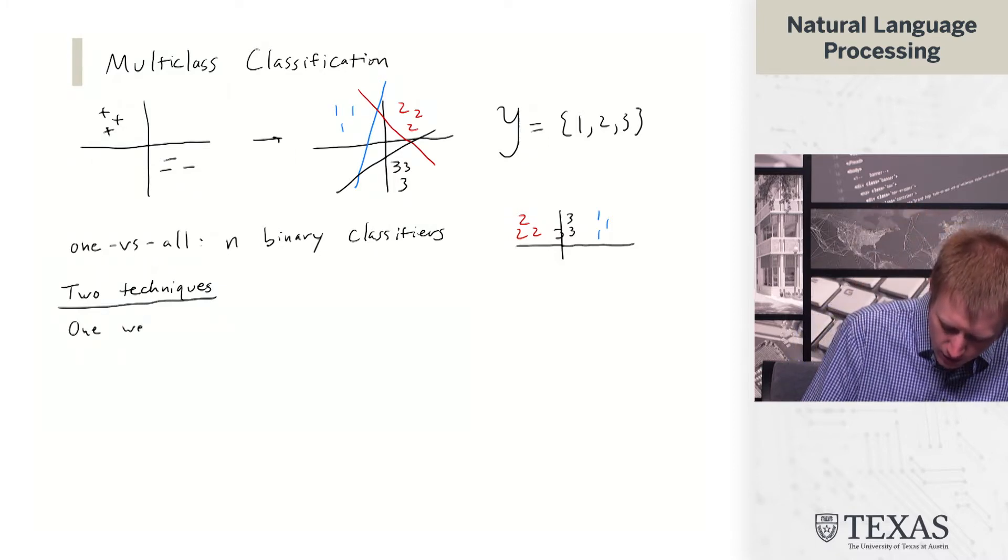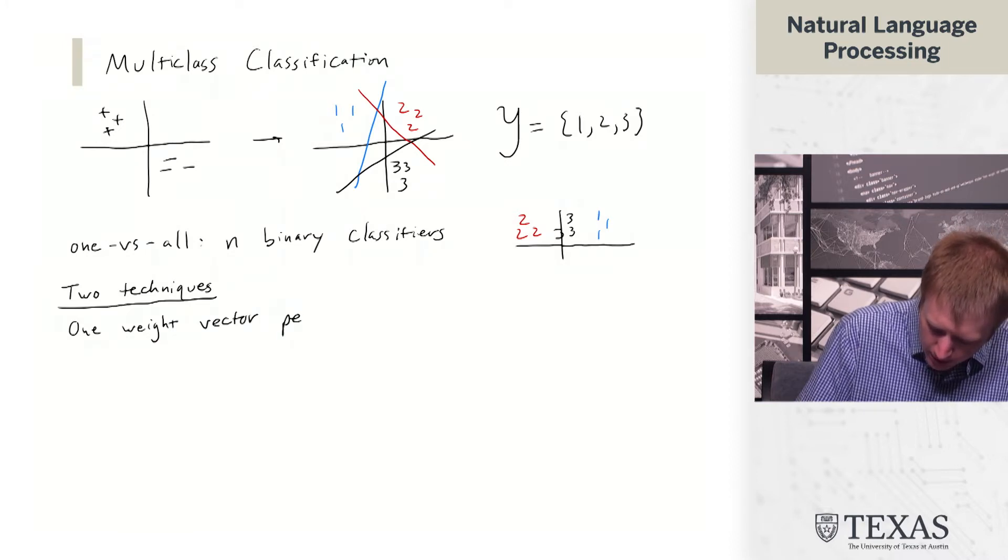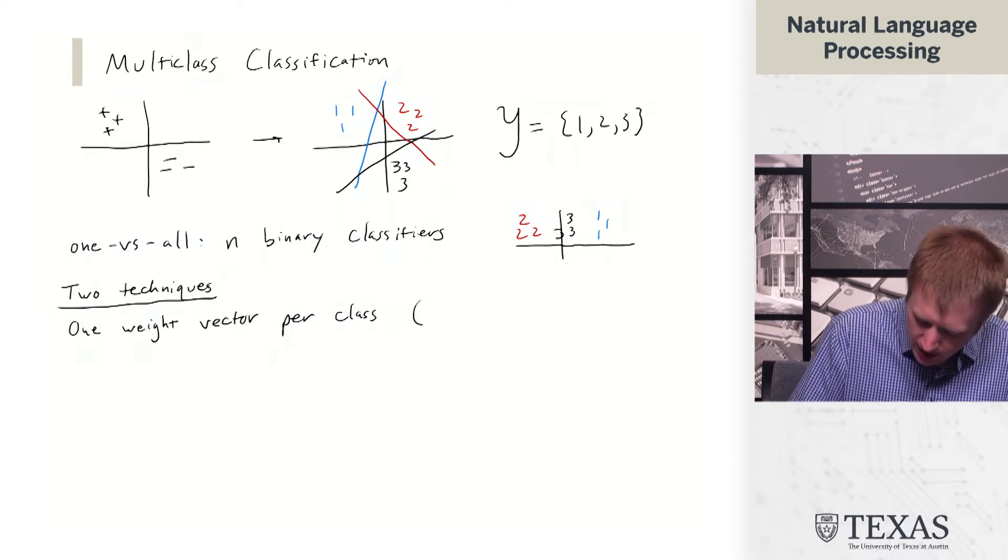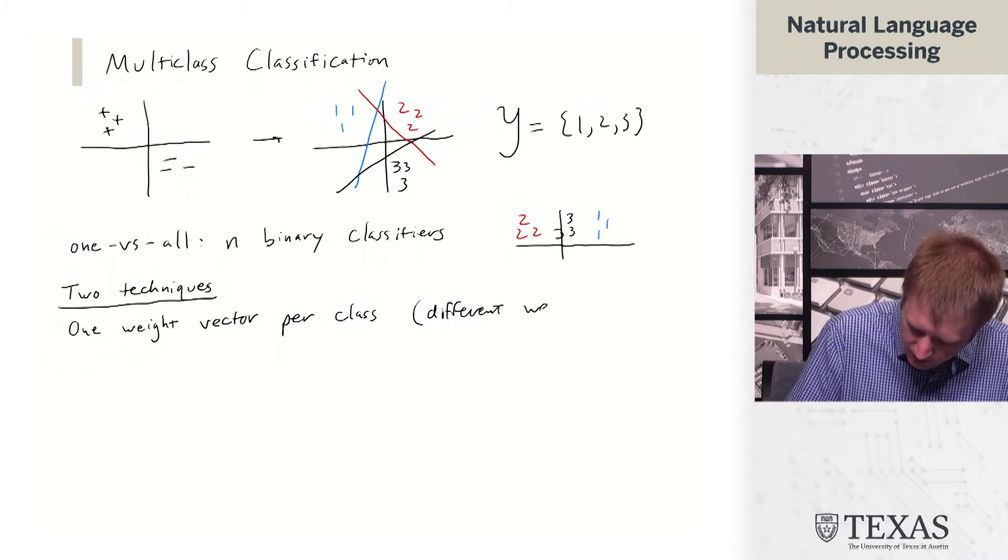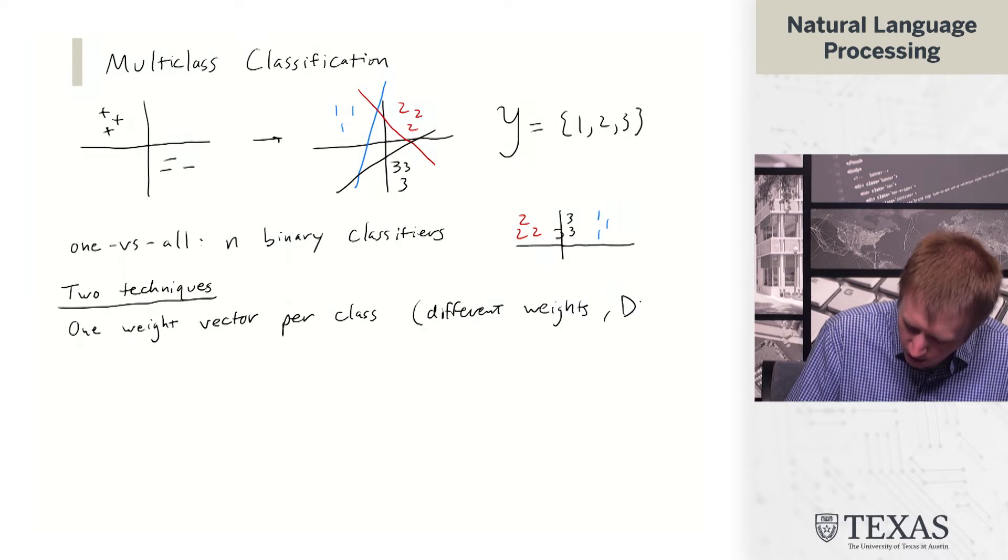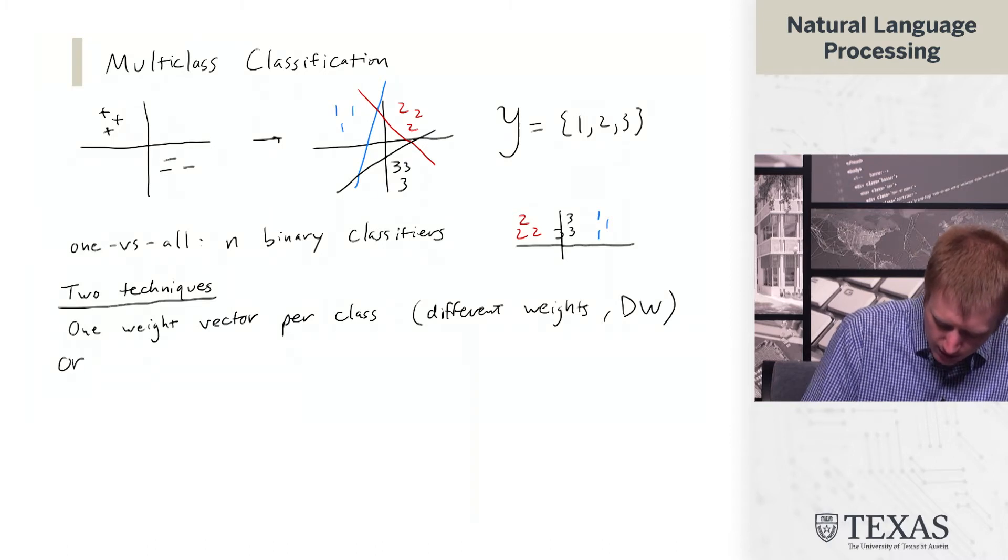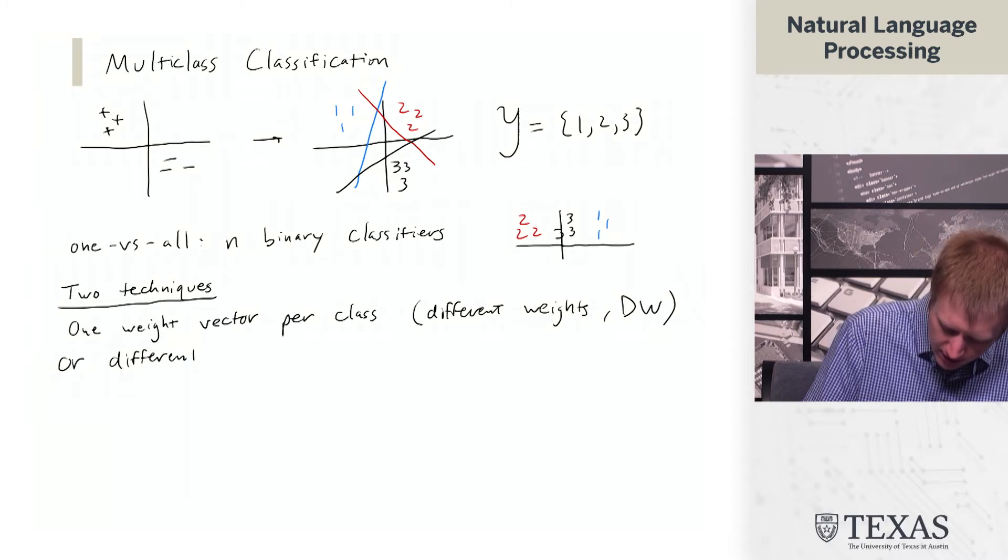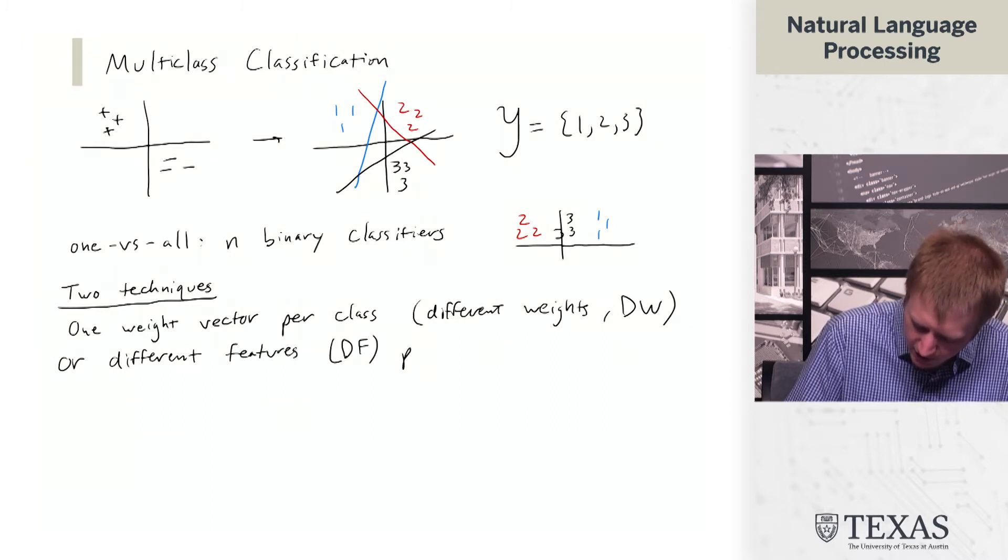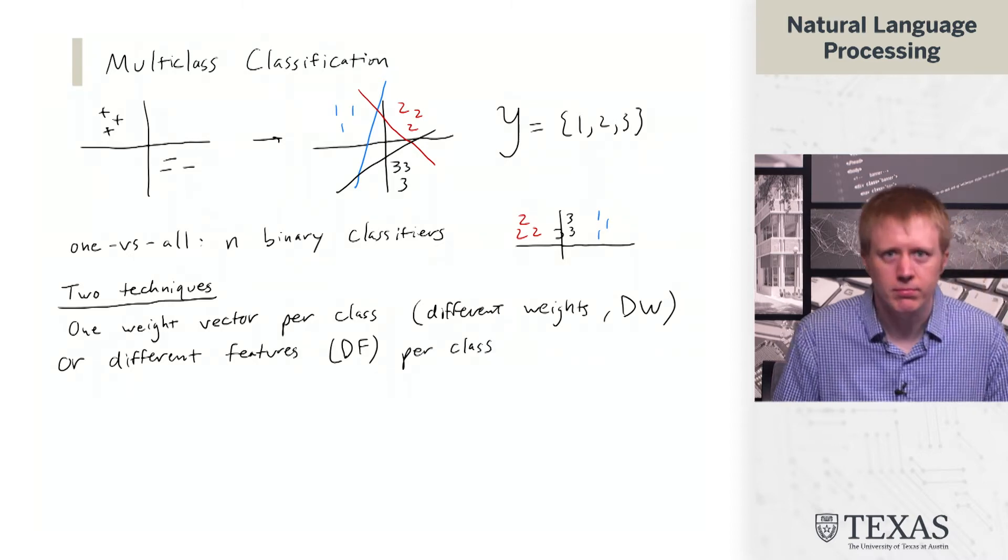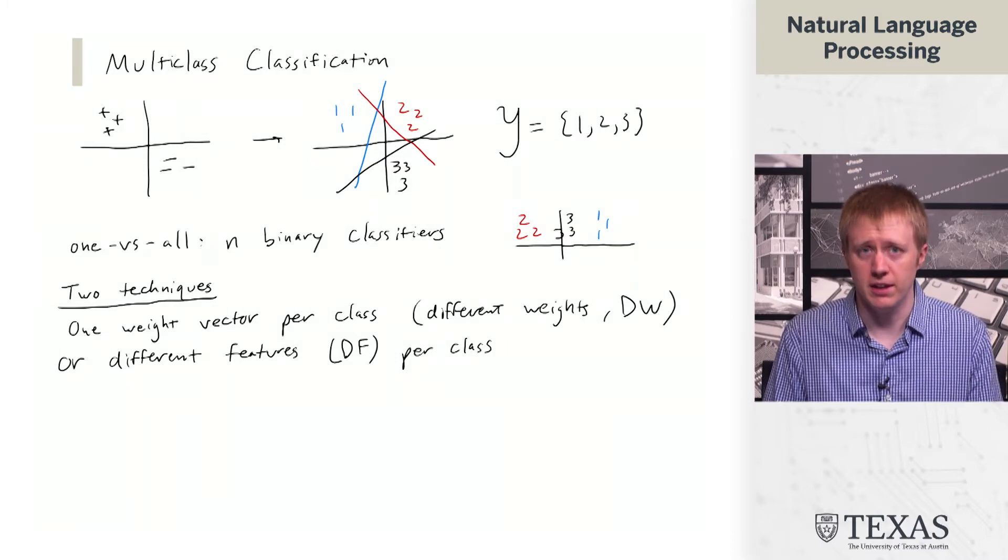We're either going to have one weight vector per class, we're going to call this the different weights or DW approach, or we have different features per class, we're going to call that DF per class. These are two more or less equivalent ways of formulating things in the multiclass case.